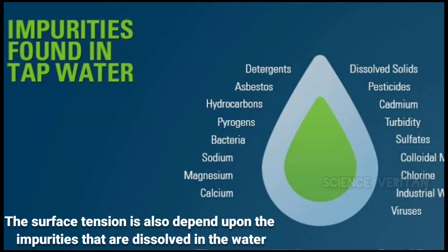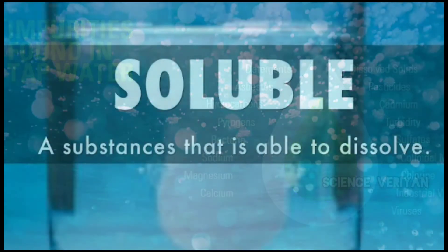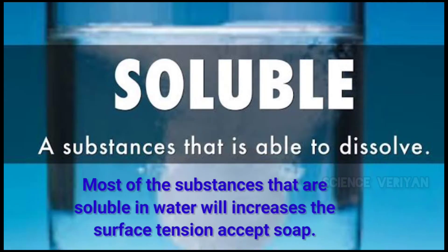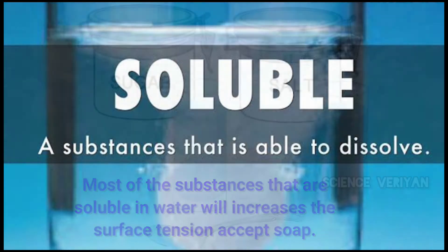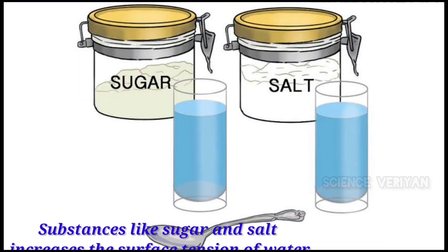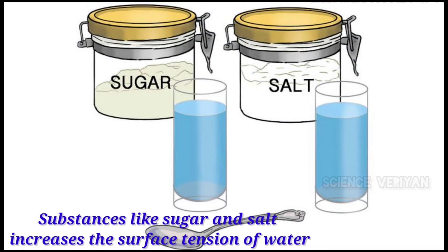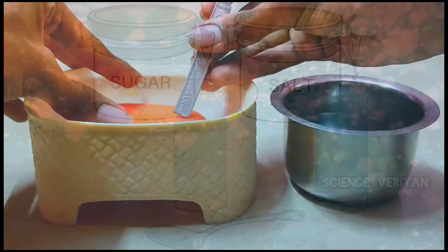If the surface tension depends on water or impurities, it depends on the impurities. If you add certain substances to water, it will increase the surface tension. For example, if you add water or sugar, it will increase the surface tension.